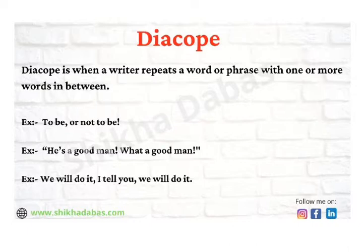The next literary device is diacope. Diacope is when a writer repeats a word or phrase with one or more words in between. The best example is from Hamlet's speech: 'To be or not to be.' Another example is: 'He is a good man, what a good man' — 'good man' is repeated to emphasize the point and draw attention to that phrase.